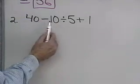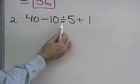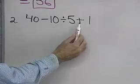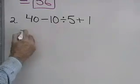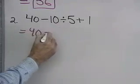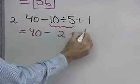We have 40 subtract 10 divided by 5 plus 1. I have subtraction, multiplication, and addition. According to my rule for order of operations, I want to do my division first. So this will be 40 subtract, now I'll do 10 divided by 5 which is 2, plus 1.